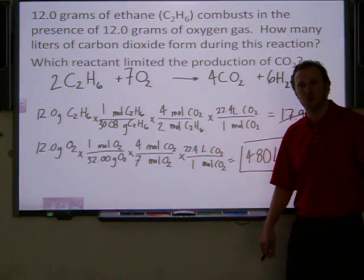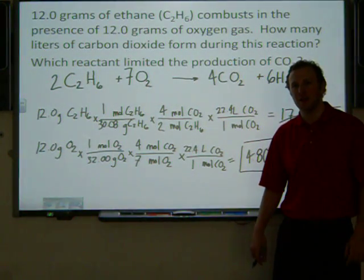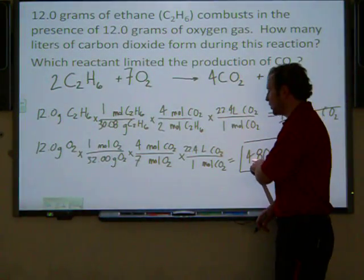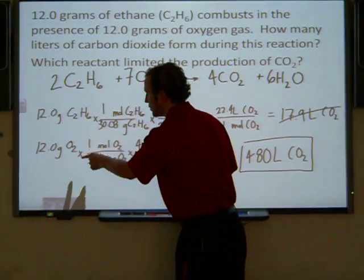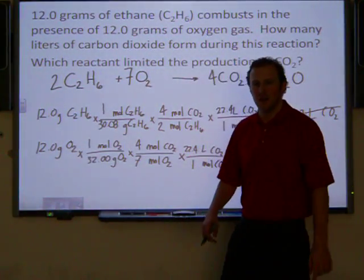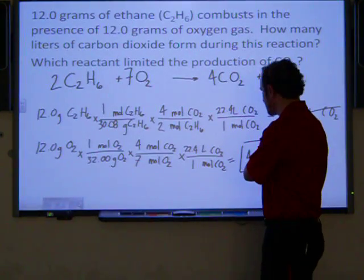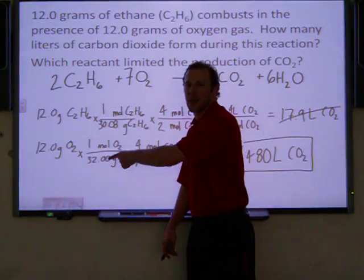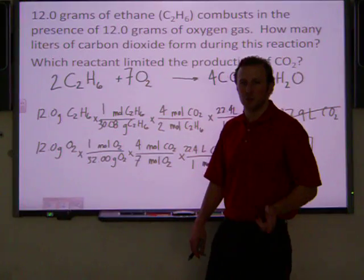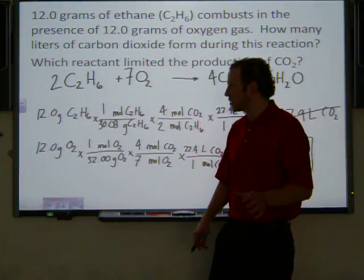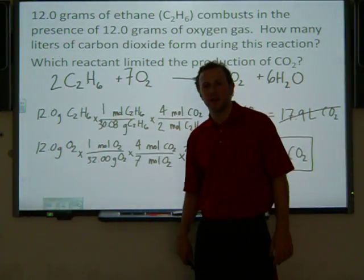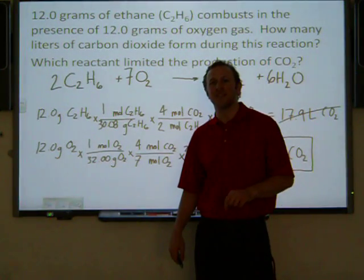Our theoretical yield is 4.80 liters of carbon dioxide. And, so, when it goes back to which one limited, well, these are our two reactants, either the ethane or the oxygen. And, in this case, the one that limits production is going to be the oxygen gas. And, so, when this reaction is done and completed, and it's all gone, all that will be left over is the ethane. And, that one will be in excess.